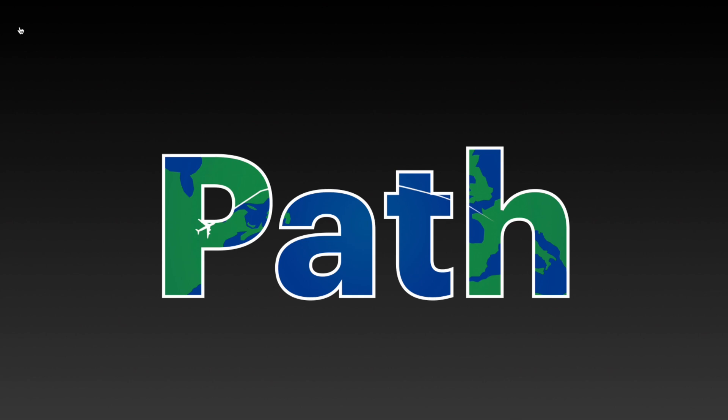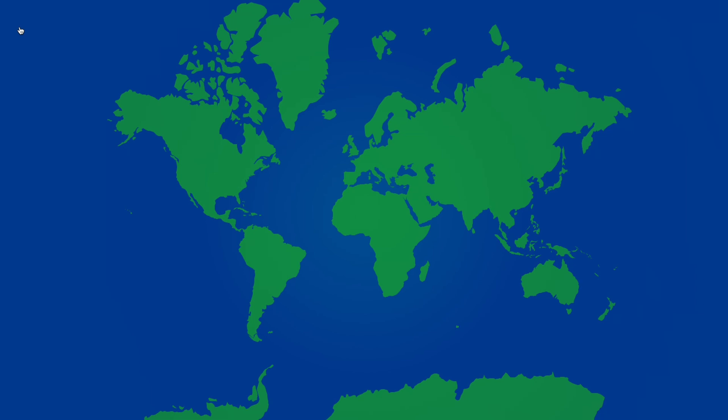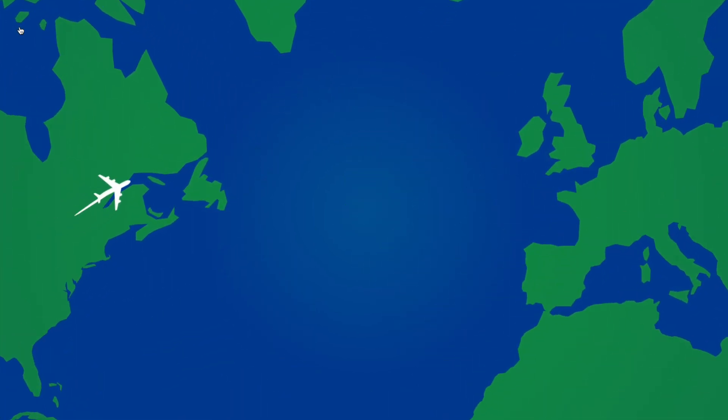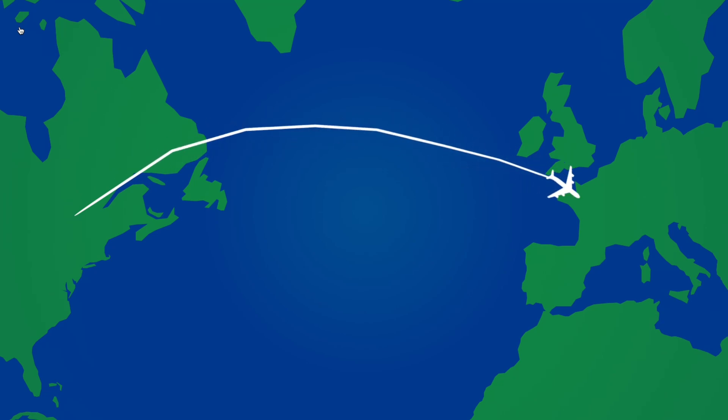Our last and most creative use of a map is called a path. You create a specific area of the map where you want an object to travel. We can zoom in and show the flight path from the United States over to France, and you can have that line show up or make it invisible. It's a great way to show travel of planes, ships, or even people or vehicles over land.